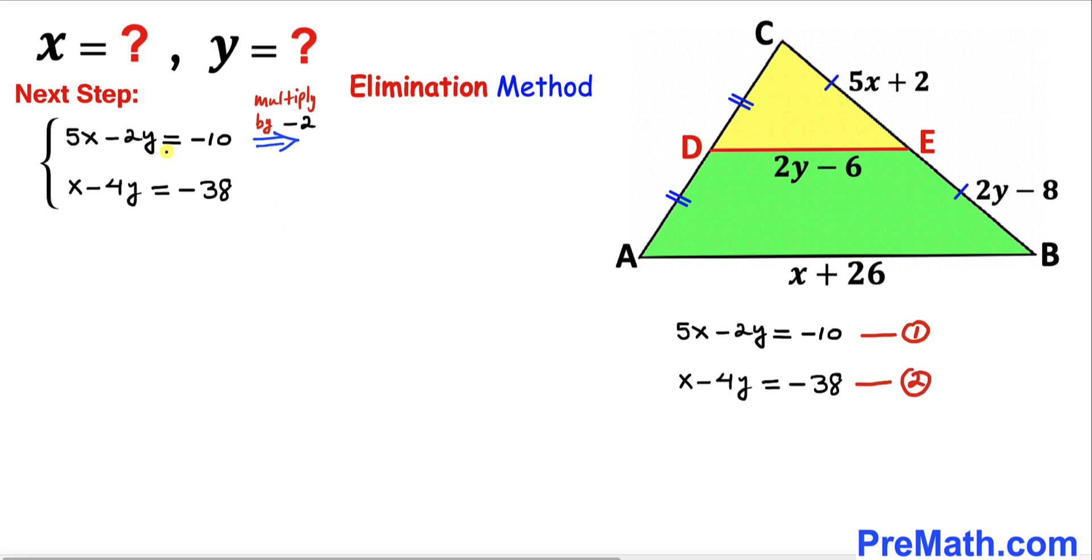Let's multiply the first equation by negative 2 on both sides. Our equation becomes negative 10x plus 4y equals positive 20 on the right-hand side. We'll leave the second equation the same.